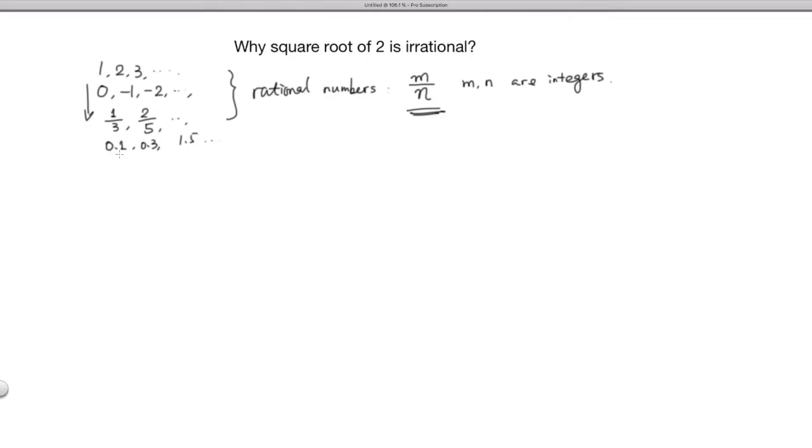Actually, I want to point out, for decimals, clearly decimals can be written as fractions. So 0.1 is equal to 1 over 10, right? So decimal numbers are the same as fraction numbers. They all belong to the category of rational numbers.